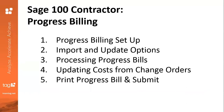Number one: Progress Billing Setup. I'll cover all of the information that you'll need to enter in order to generate your Progress Billings. Number two: importing and updating information into the Progress Billings and all of your options there. Number three: processing and calculating these Progress Billings. Number four: updating costs from change orders and the two different methods you have in Sage 100 Contractor. And lastly, how to print and what options you have available for that Progress Billing and submitting.